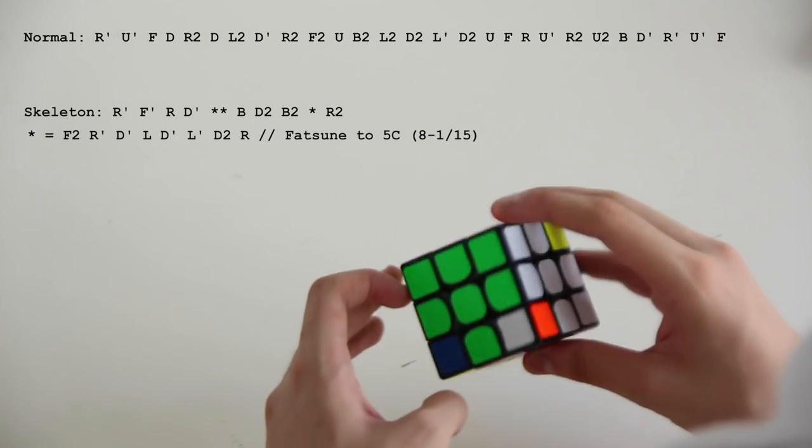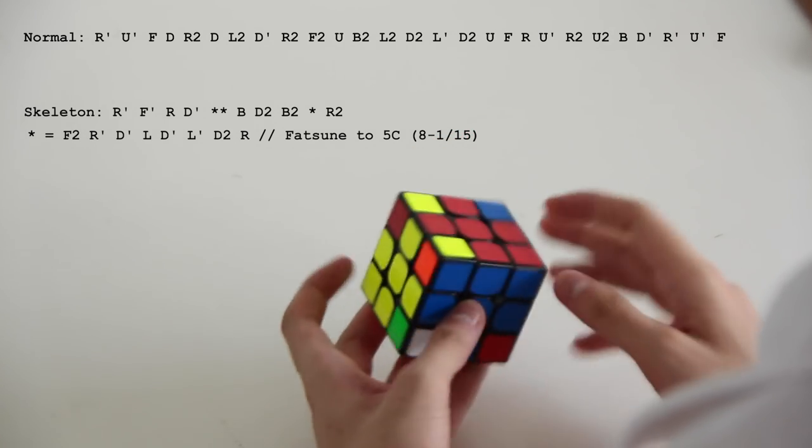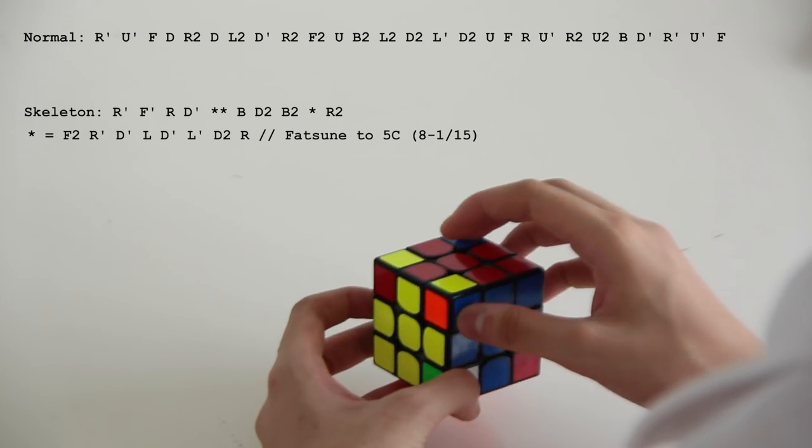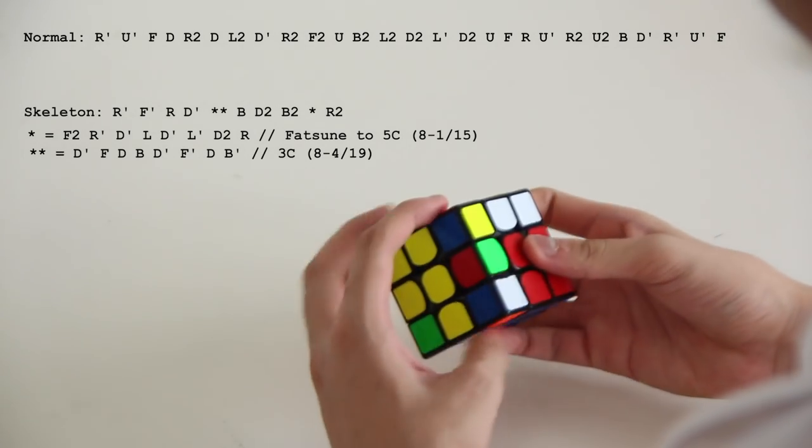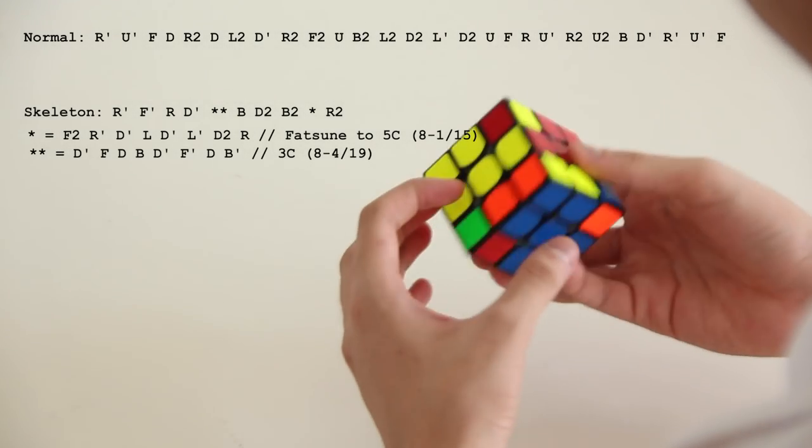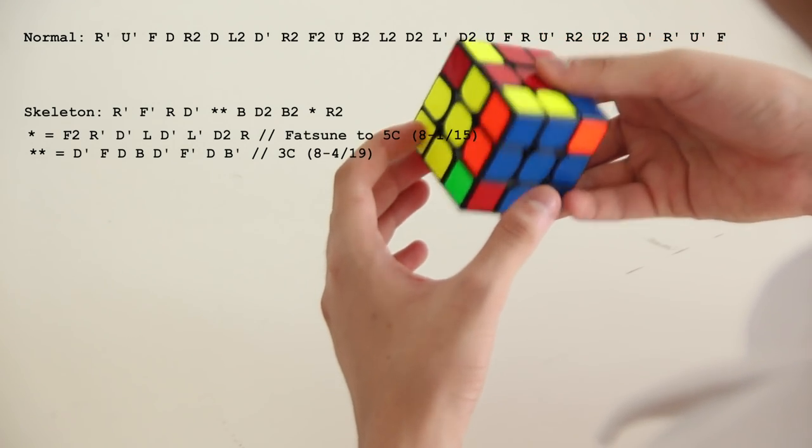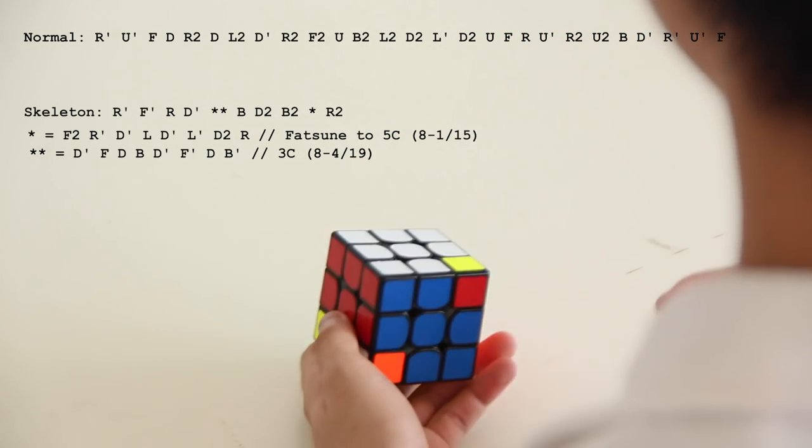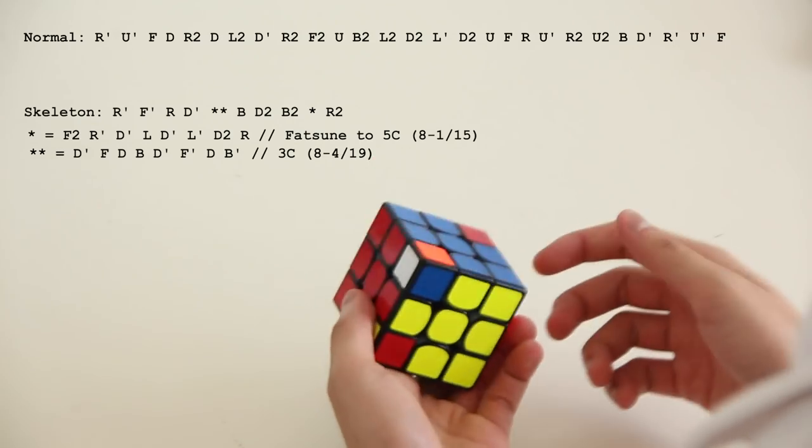So in this spot, what I did was these 3 corners, and it cancels 4 moves: D', F, D, B, D', F', D', B'. That cancels 4, which gives 19 to 3 corners.